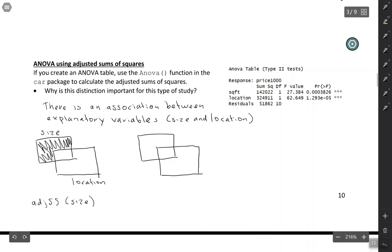You can obviously do something similar for location. If you were to calculate the adjusted sums of squares for location, you'd be talking about the variability that's explained just by location. That if size were in the model, how much additional benefit would there be by adding location. Or if we want to use the language of regression, how much is explained by location after adjusting for size.